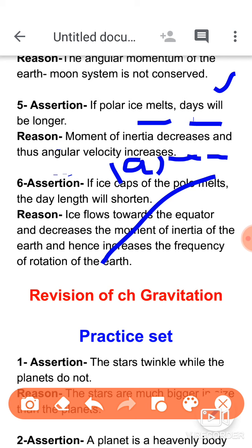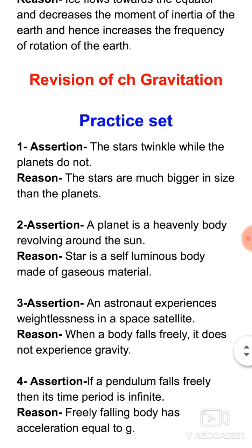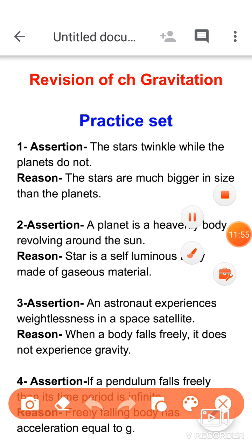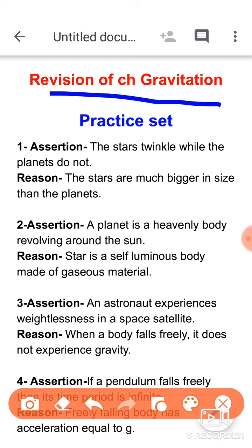For question number six, it is the opposite situation — when the assertion is correct, the reason is wrong. So both assertion and reason are false. Practice the available questions for these chapters. The pattern has changed, so practice with what is available. Now we will start the revision of the Gravitation chapter.